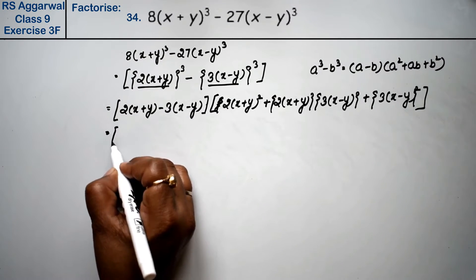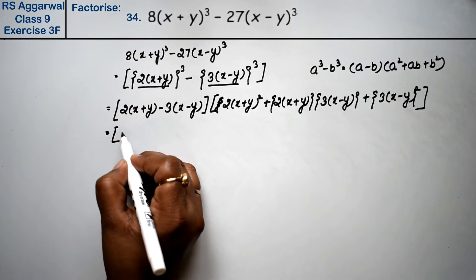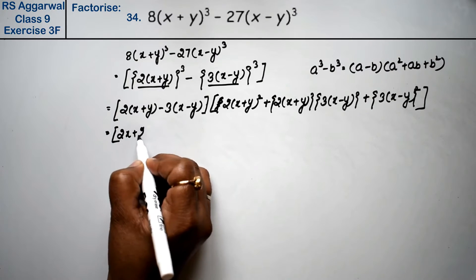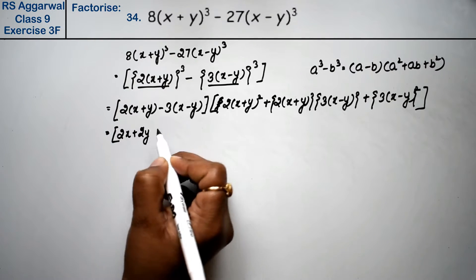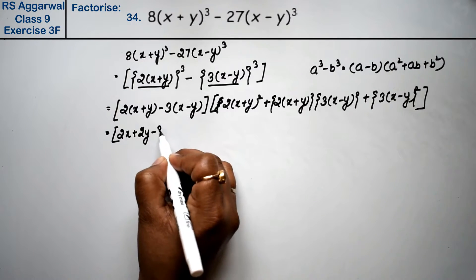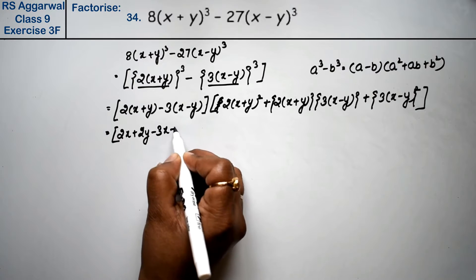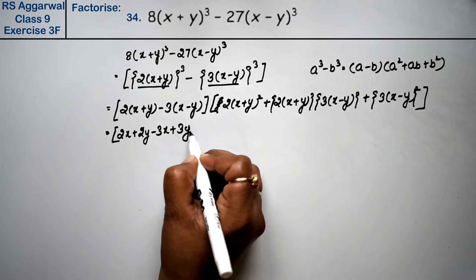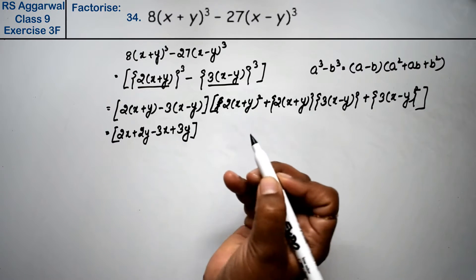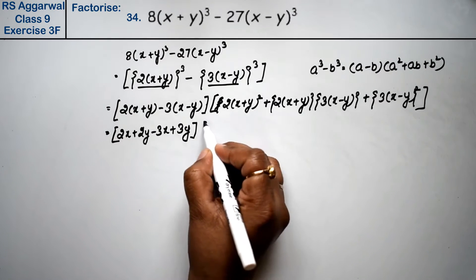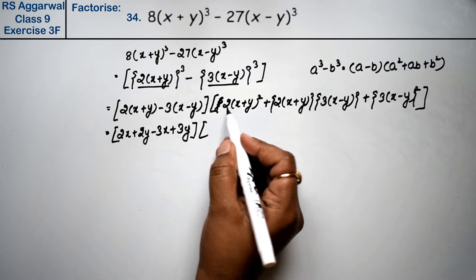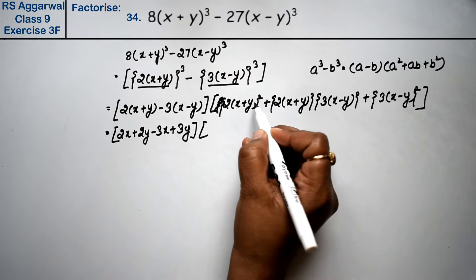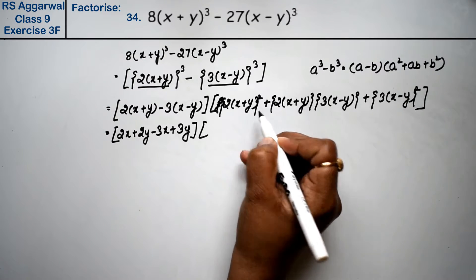Now opening the first bracket: 2x + 2y minus 3x minus minus, which gives us plus 2y. So the first factor simplifies. This is a whole square expression.